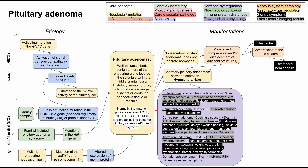Next is a somatotroph adenoma, which accounts for about 10 to 15% of secretory pituitary adenomas. You'll have increased growth hormone on blood tests, resulting in acromegaly or gigantism.